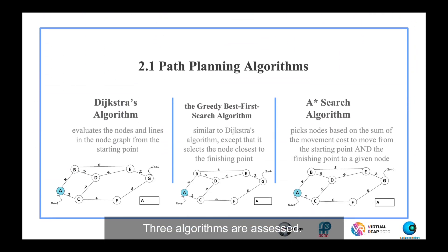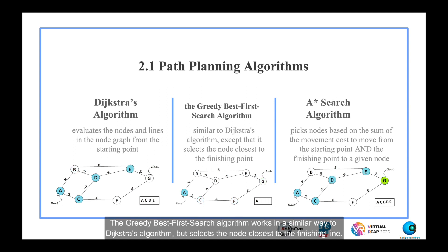Three algorithms are assessed. Dijkstra's algorithm evaluates the nodes and lines in the node graph from the starting point of the vehicle. The greedy best first search algorithm works in a similar way to Dijkstra's algorithm, but selects the node closest to the finishing line. A-star search algorithm picks nodes based on the sum of the movement cost to move from the starting point to a given node and the estimated movement cost to move from that given node to the finishing point.